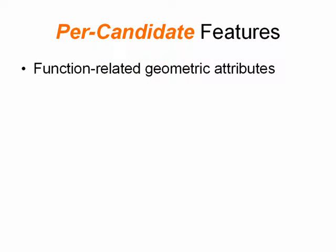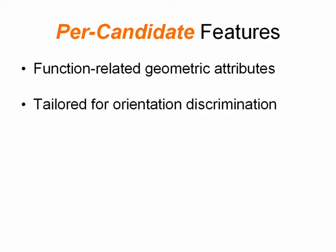To select the natural base from among the candidate bases, we introduce functionality-related geometric attributes for each candidate. To make our method generalize well, we introduce attributes that are abstracted from concrete shapes and tailored for orientation discrimination only.